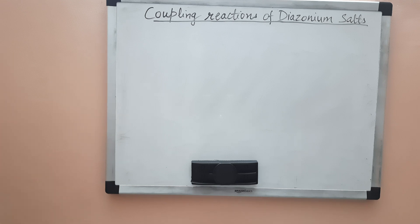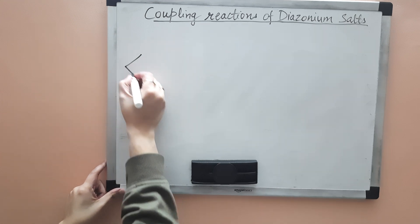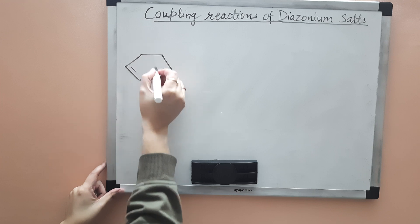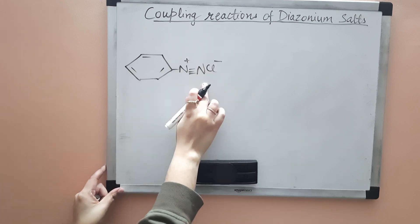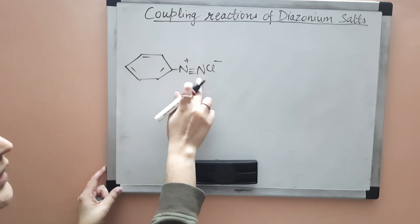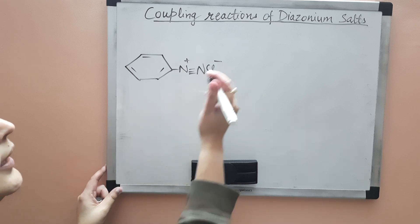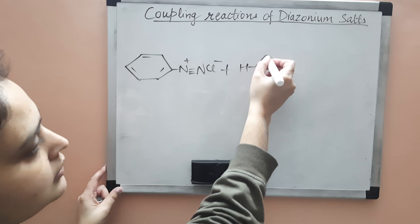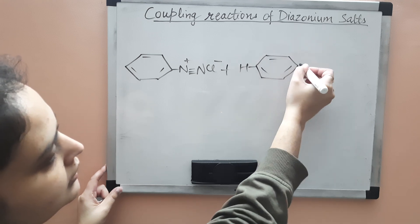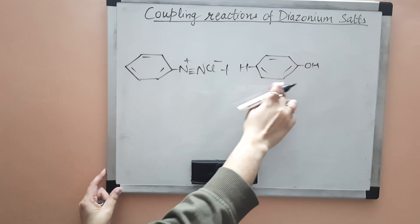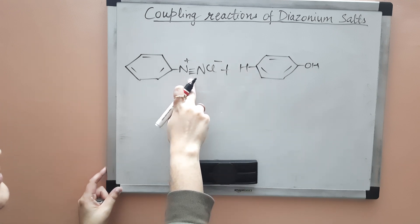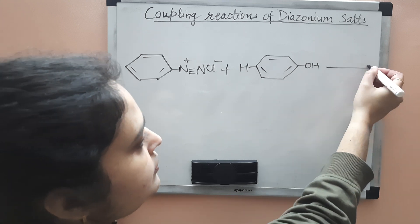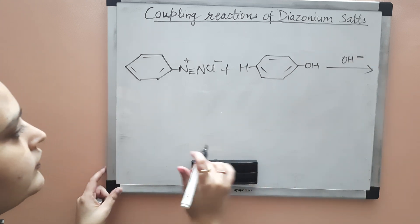Let us take the example of the reaction of benzene diazonium chloride with phenol — this is called a coupling reaction. We take benzene diazonium chloride, which is a benzene ring attached to N₂⁺Cl⁻, and it is reacted with phenol. Phenol is a benzene ring attached to a hydroxy group, with a hydrogen at the para position. This is coupled with the diazonium group in the presence of OH⁻.